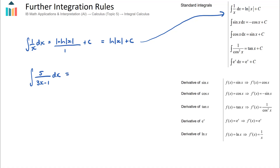As a further example, consider the integral of 5/(3x − 1) with respect to x. Using the same technique: 5 stays on the numerator, we take the natural log of |3x − 1|, and divide by the derivative of the denominator, which is 3. The result is 5 · ln|3x − 1| / 3 plus c.